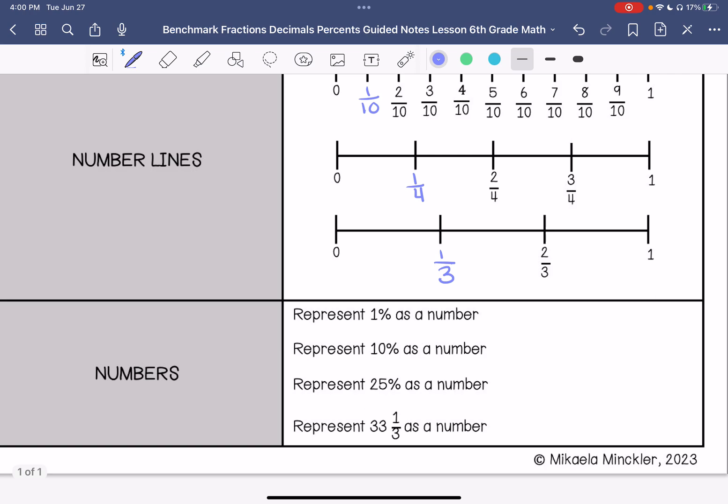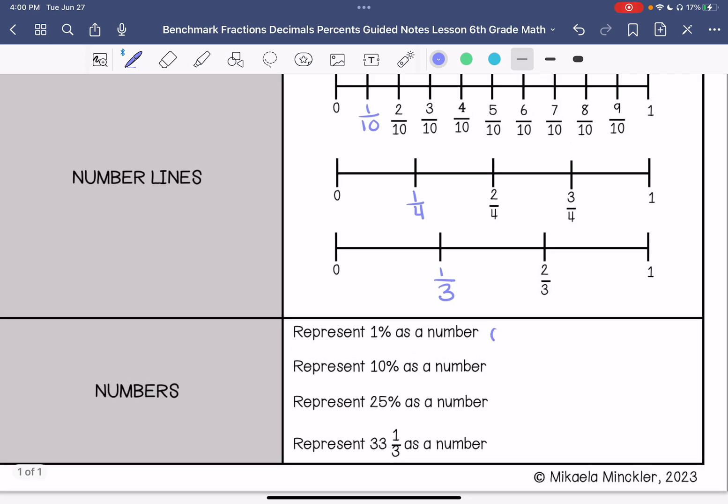All right, numbers. If I represent 1% as a number, that would be 0.01. 10% would be 0.1. 25% would be 0.25. And 33 and a third would be 0.3 repeating.